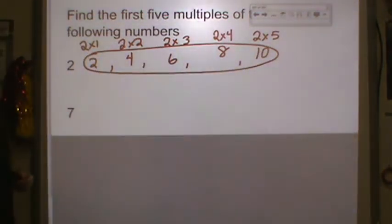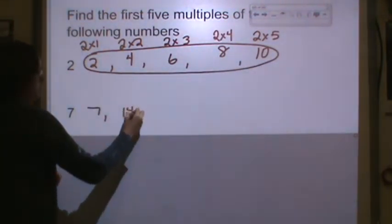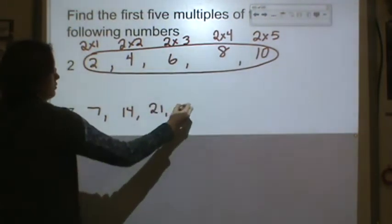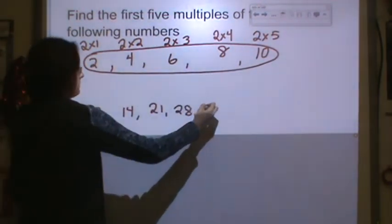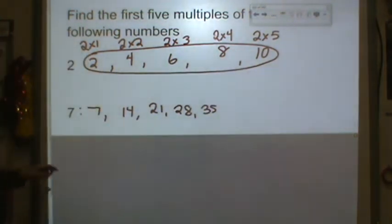Let's try them with 7. So we'll do 7 times 1 is 7. 7 times 2 is 14. 7 times 3 is 21. 7 times 4 is 28. And 7 times 5 is 35. So those are the first five multiples of 7.